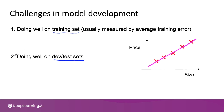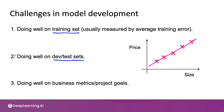After you do well on the dev set or test set, you also have to make sure that your learning algorithm does well according to the business metrics or the project's goals. Over the last several decades, a lot of machine learning development was driven by the goal of doing well on the dev set or test set.